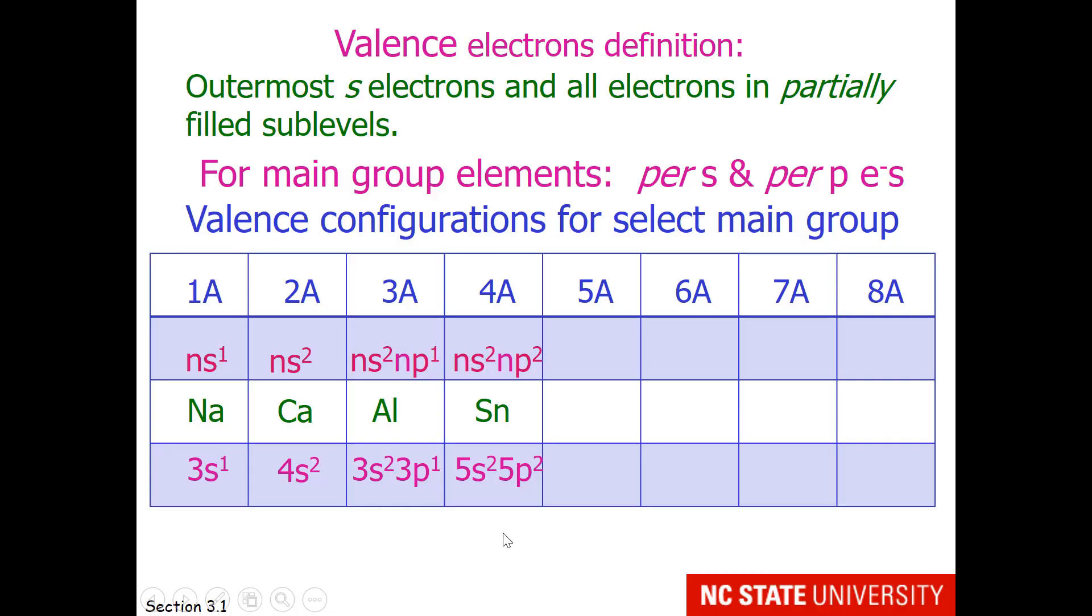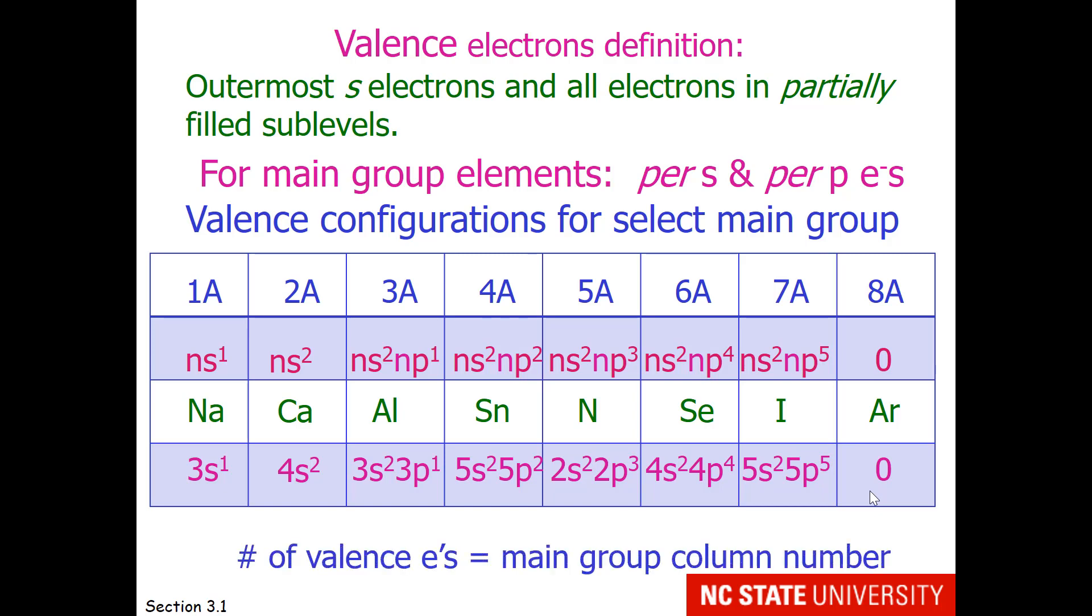I'm sure at this point you can guess the pattern. Something in column 5, like nitrogen, has 5 valence electrons. Something in column 6, like selenium, has 6 valence electrons. And something in column 7, like iodine, has 7 valence electrons. Noble gases do not typically bond to anything until you get to the heavier ones, so there's really no description of valence electrons for noble gases. They have none, and an example here is argon. Remember, the number of valence electrons is equal to the main group column number.